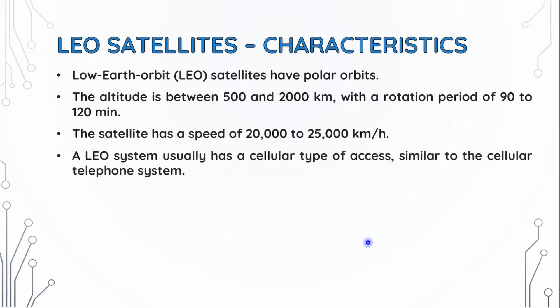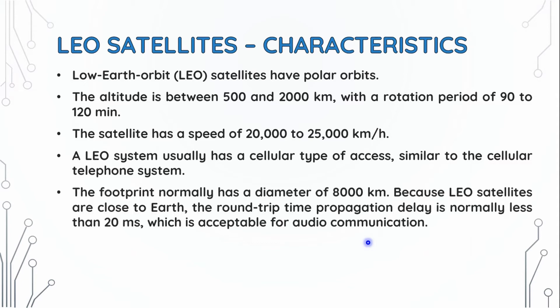The LEO system usually has a cellular type of access, similar to the cellular telephone system. The footprint normally has a diameter of 8,000 km. The round-trip propagation delay is normally less than 20 ms, which is acceptable for audio communication.